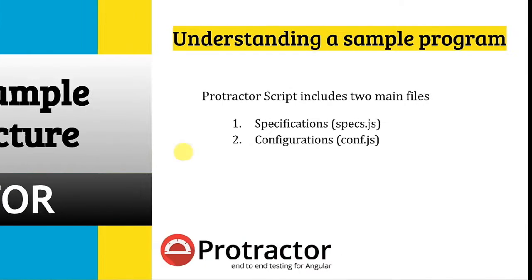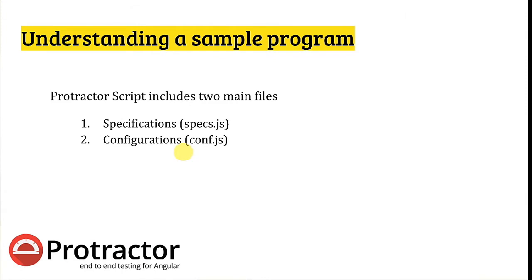Once you install Protractor on your machine, it keeps two files locally: one is conf.js and the second one is specs.js. Specs.js will have all the automation related to your test cases — you'll be writing your test cases inside specs.js and the settings-related configuration goes in conf.js. You'll also have to pass the reference of specs.js inside conf.js, and when you trigger conf.js, it will by default run all the test cases in specs.js.